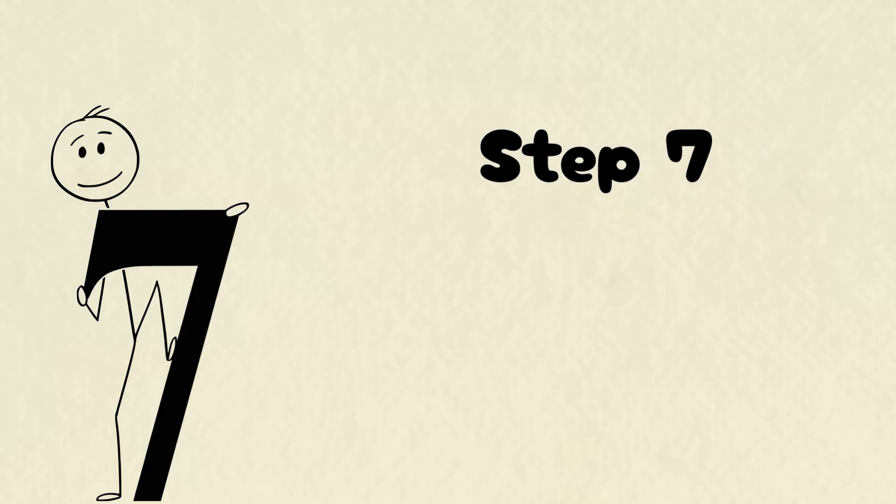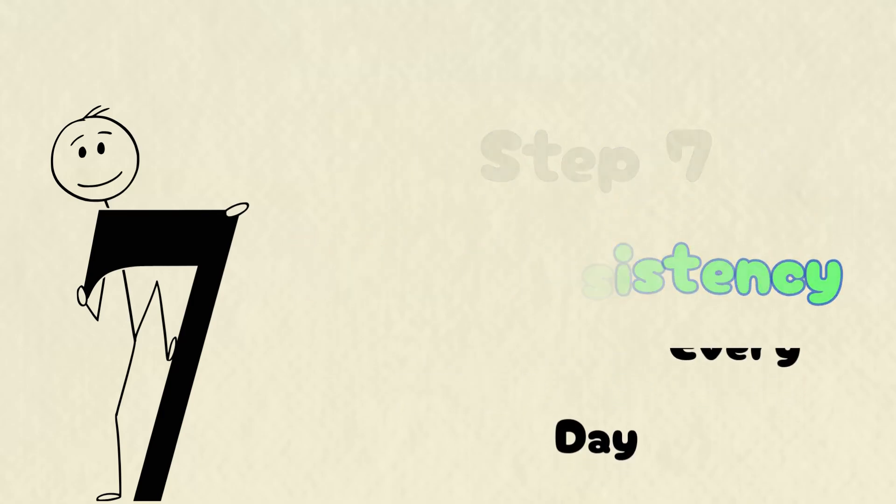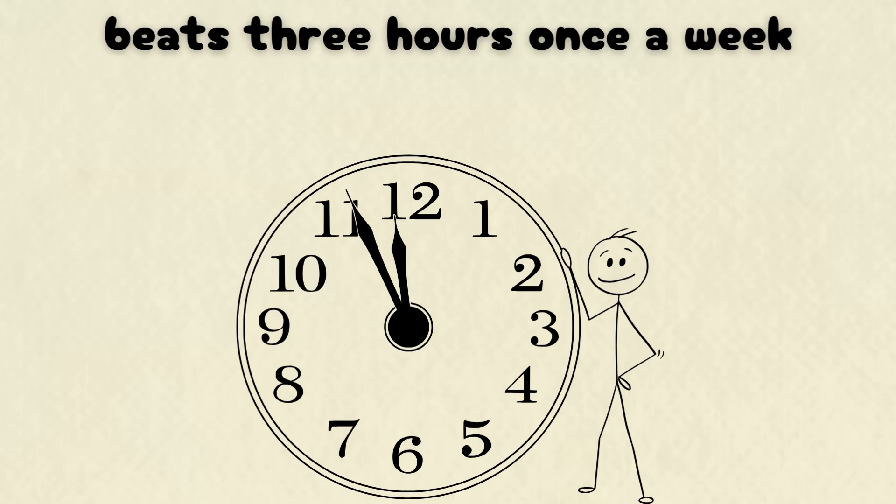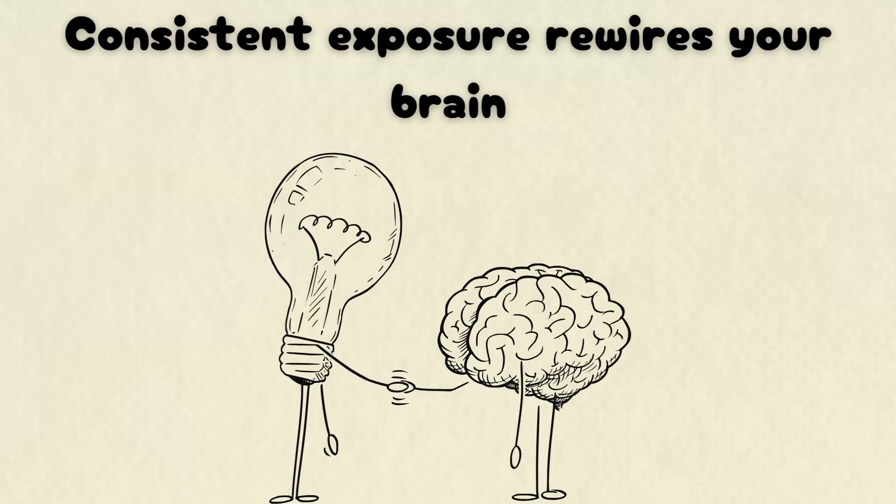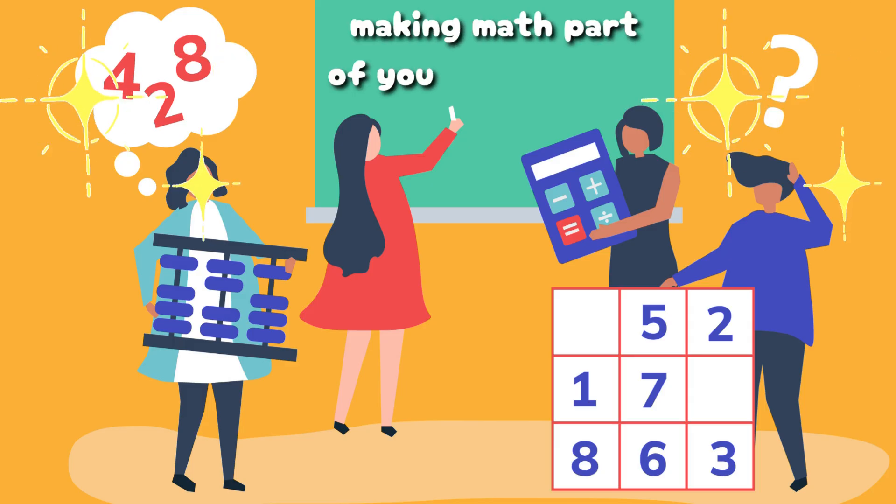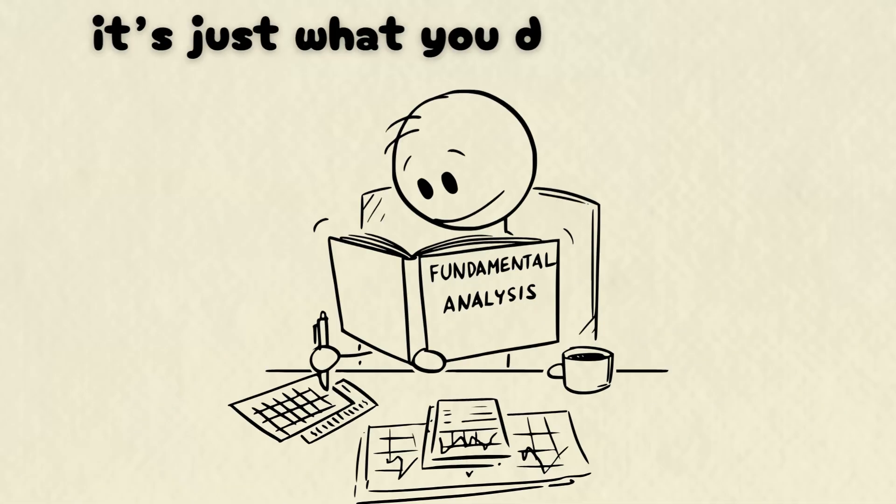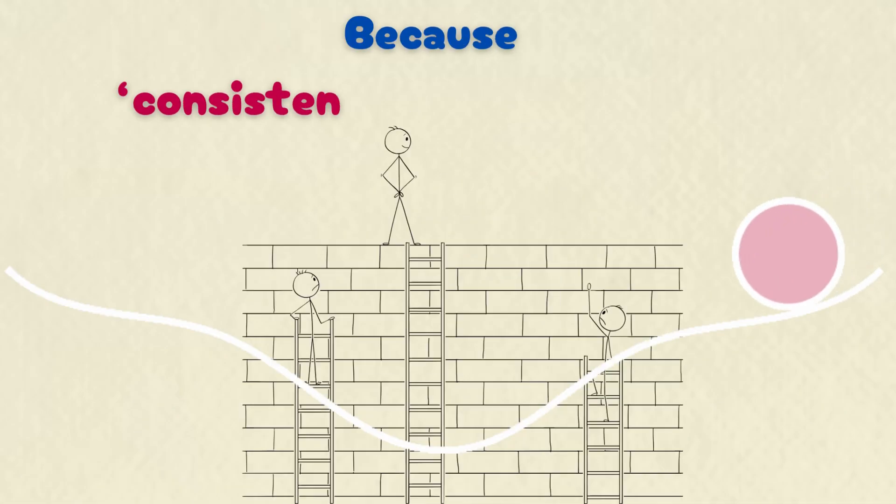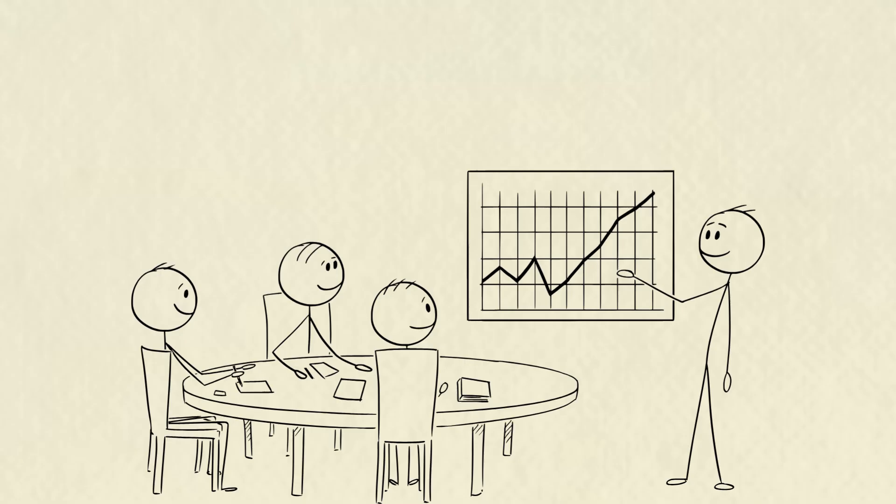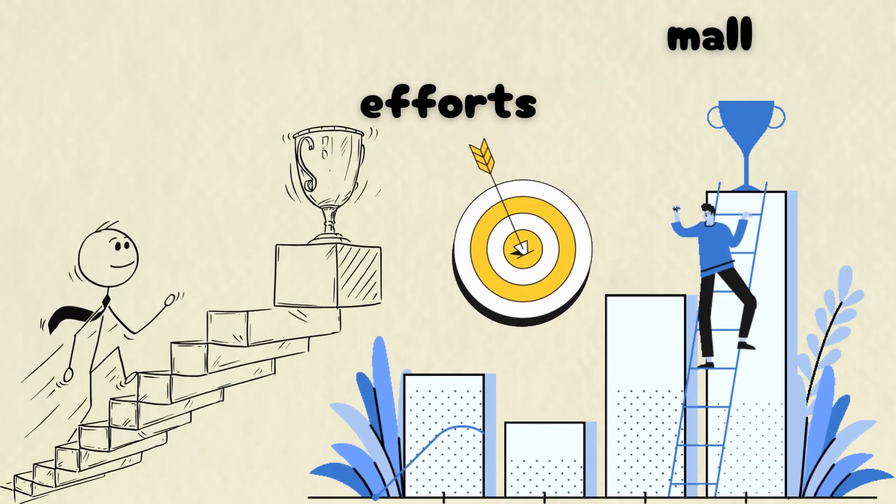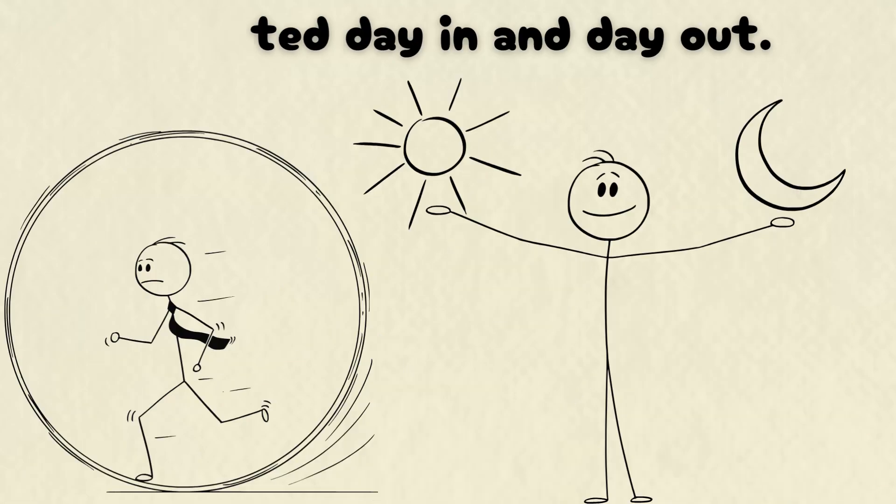Step seven, daily consistency. Small steps. Every day. Forget cramming. Even 20 minutes of daily practice beats three hours once a week. Consistent exposure rewires your brain, making math part of your daily routine. It's not a chore or a threat. It's just what you do every day. Because consistency beats intensity. As James Clear emphasizes, small, steady actions compound into extraordinary results. Success is the sum of small efforts, repeated day in and day out.